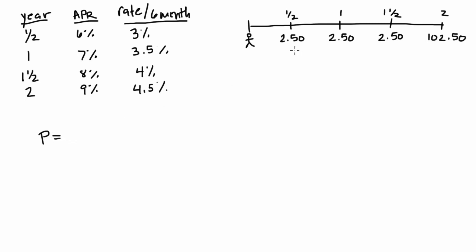...is going to be the first cash flow at six months, that $2.50, discounted at the six-month rate as given by the strips interest rate, which is 3%. So this is 1.03.